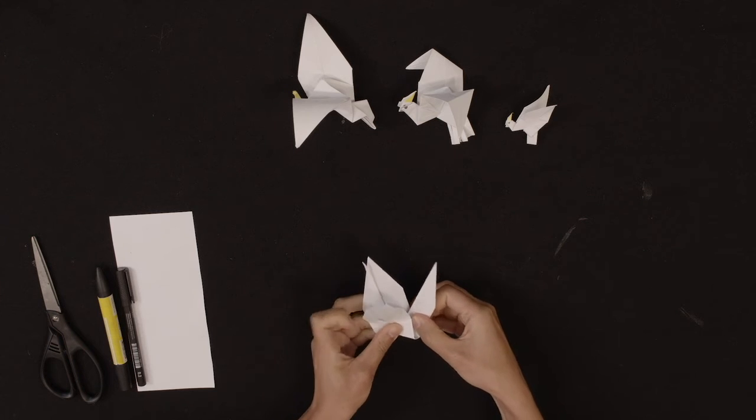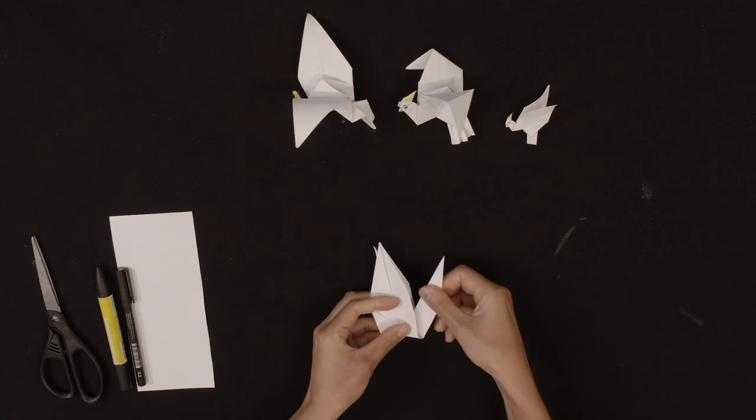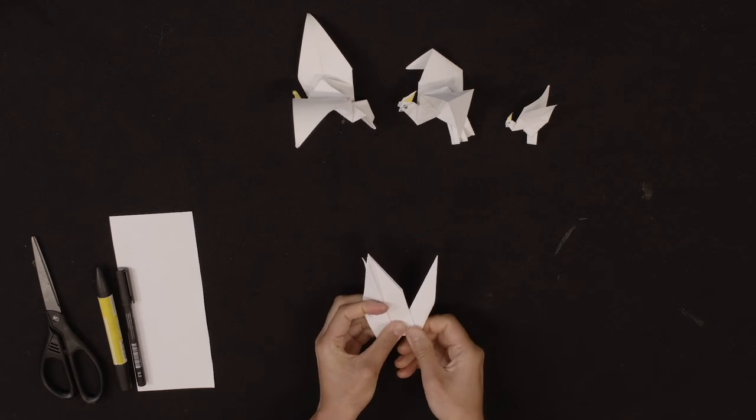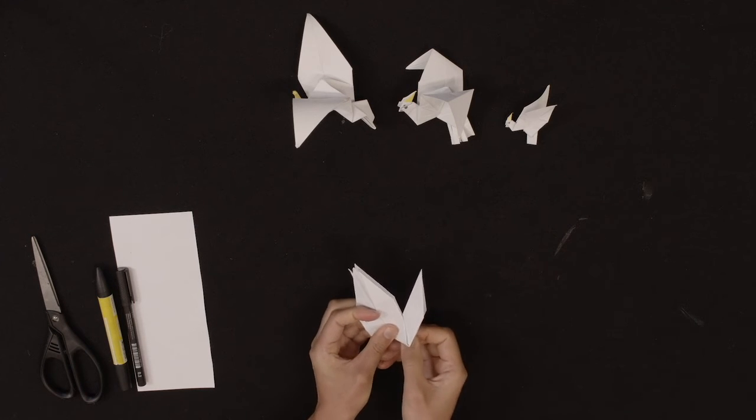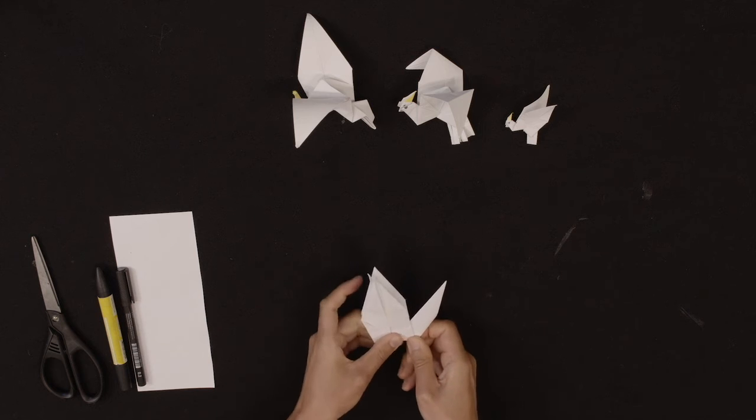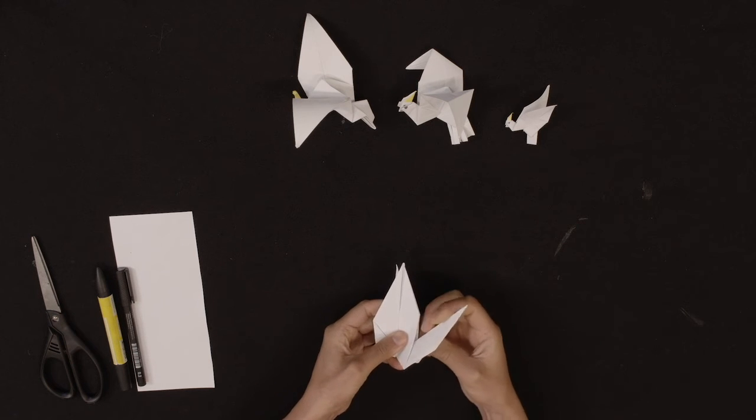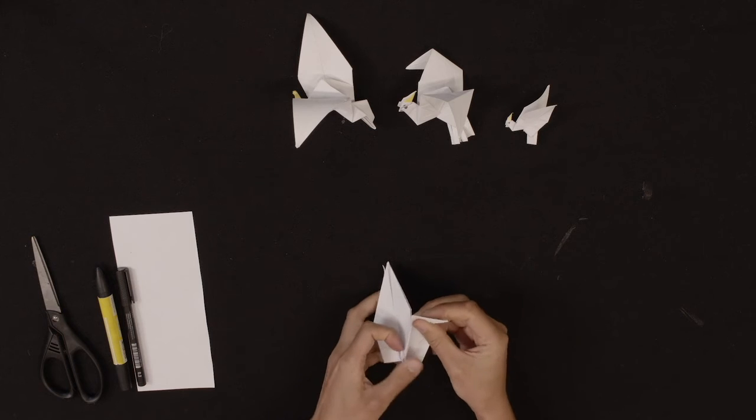And then using the thick side, the thicker side on the right, pull out the tail slightly at an angle, press it down.